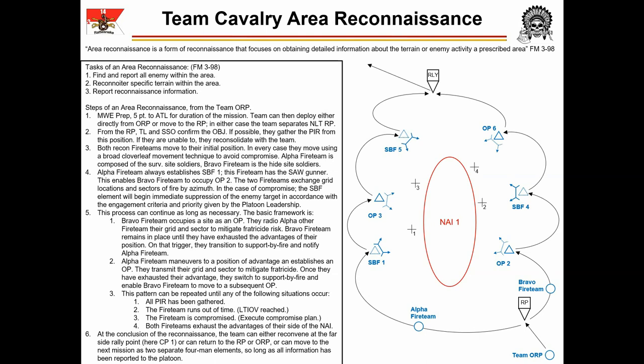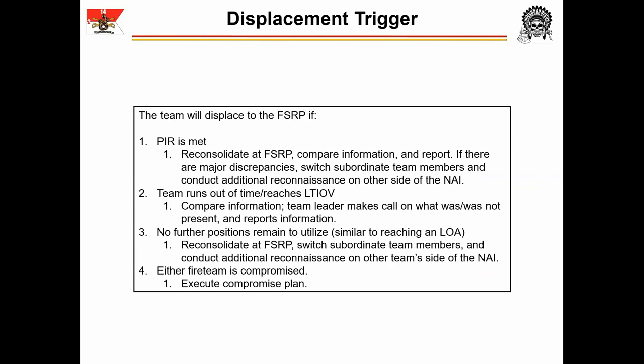Once the team hits any of the following triggers, they displace to the Far Side Rally Point and link up: PIR is met; the team runs out of time or reaches LTIOV; no further positions remain to utilize, similar to reaching an LOA; or either fireteam is compromised. In all cases, the team reconsolidates at the Far Side Rally Point or whatever rally point is dictated by the team leader. Ideally, these rally points meet all the same criteria as the release point, allowing the team a good position from which to reconsolidate and defend if necessary.